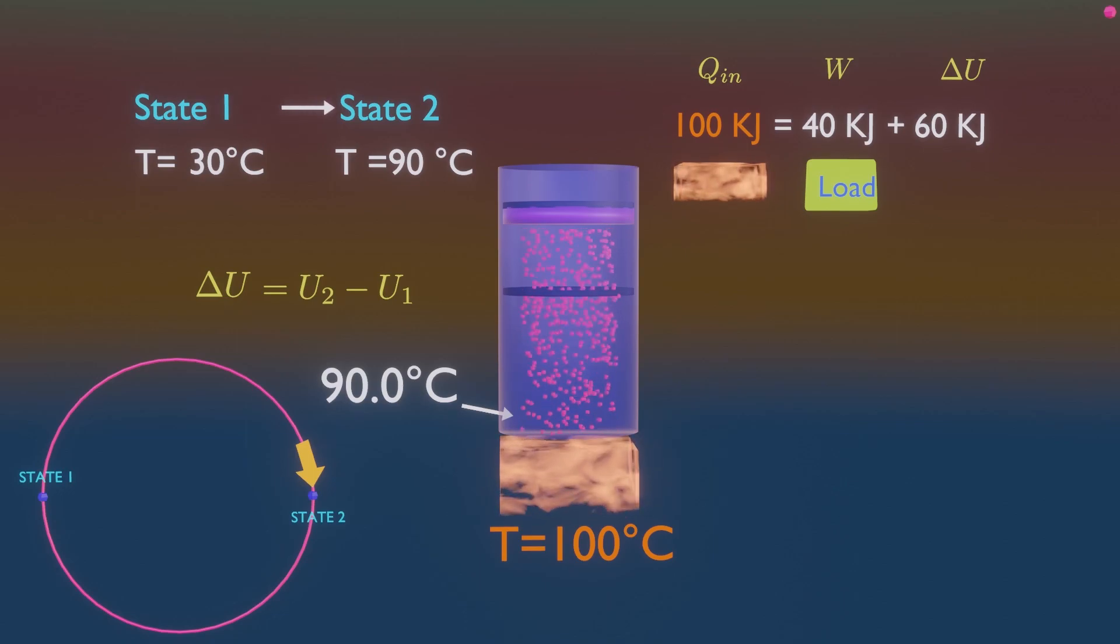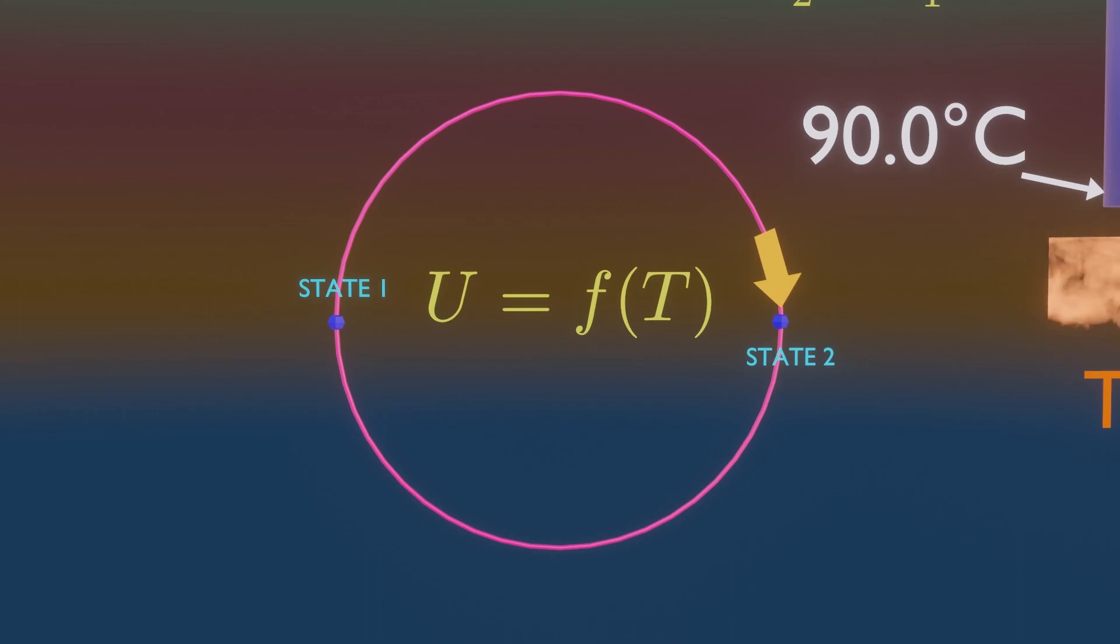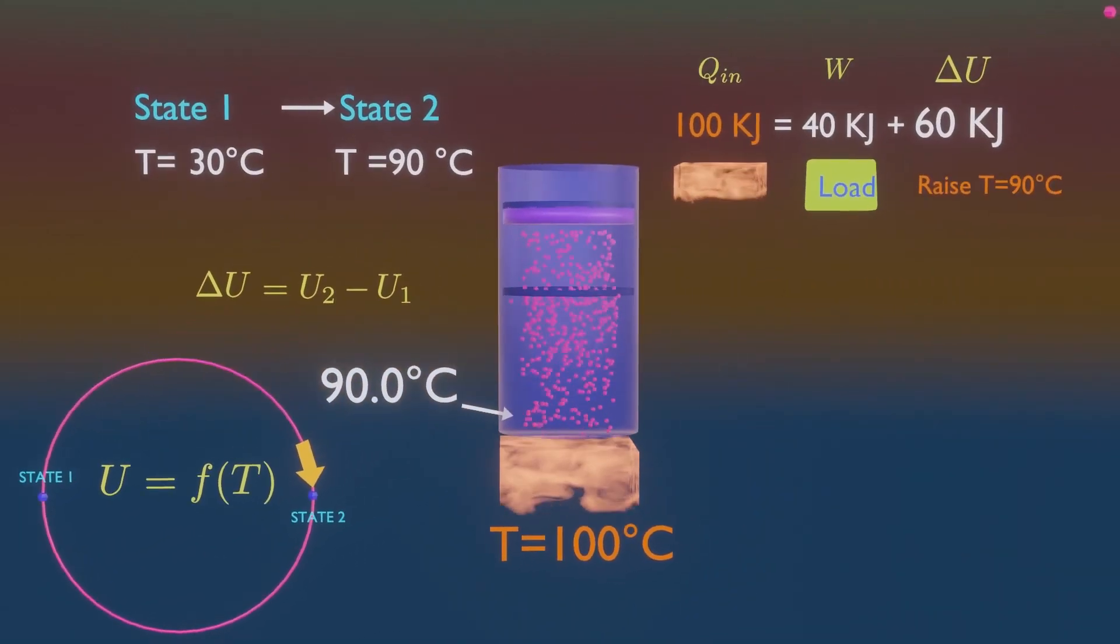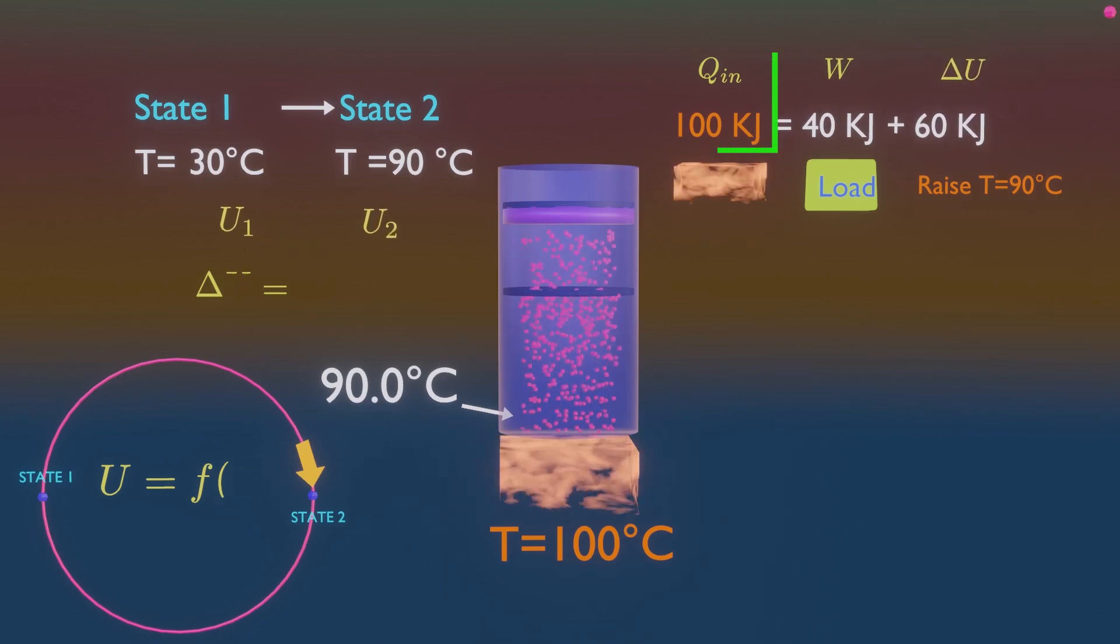But you know, for an ideal gas, internal energy is a function of temperature only. Do you know what this means? It means that some part of heat energy is used to raise the temperature of gas. In this case, 60 kilojoules of heat energy is used to raise the temperature of gas. Also remember, only half the cycle is complete here, so change in internal energy from state 1 to state 2 is not zero. It sucks some of the heat energy to raise the temperature of gas.